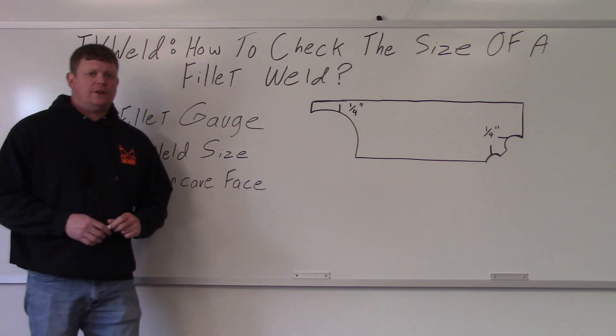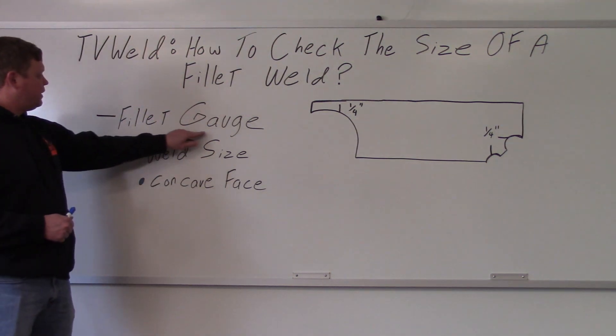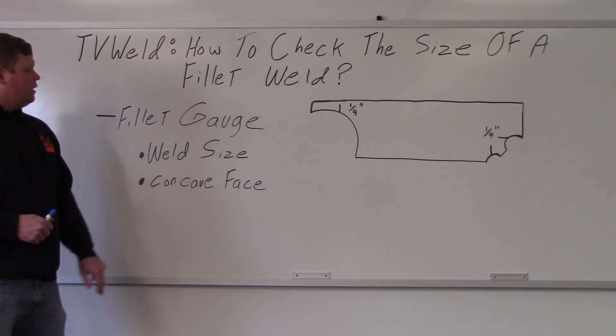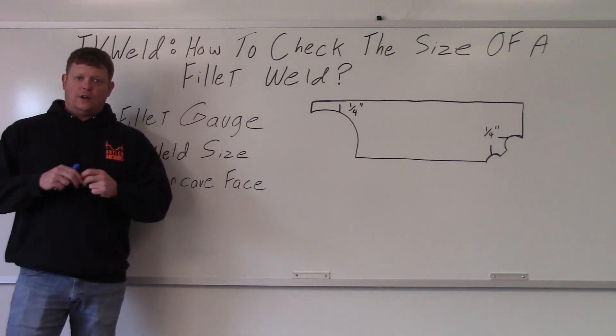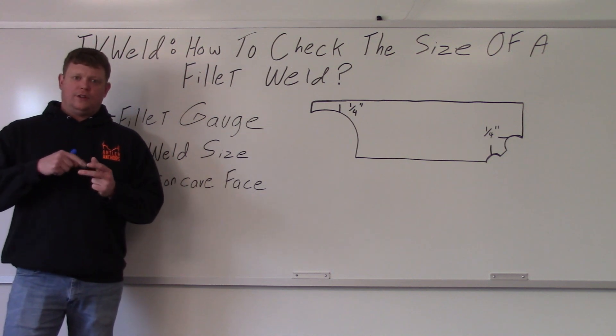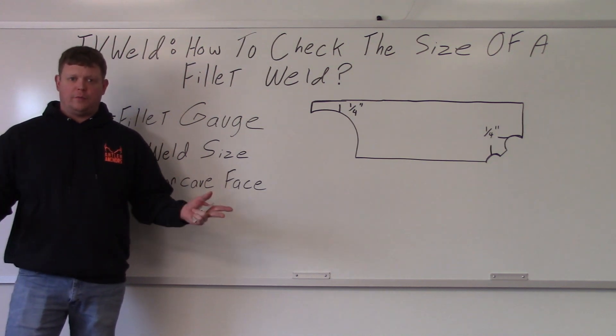So I'm going to go over how to check the size of a fillet weld. And the way you do that is through this right here, a fillet gauge. Fillet gauges come in a little nylon packet. You undo a button and they're all bolted together. You're going to undo the bolt and a bunch of them fall apart. I'll show you them here in a second.